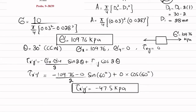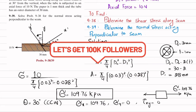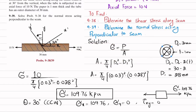So this is the shear stress along the seam. The negative sign indicates it acts in the downward direction, opposite to the x-dash y-dash orientation. The magnitude of the shear stress is 47.5 kPa.